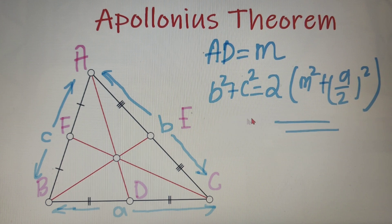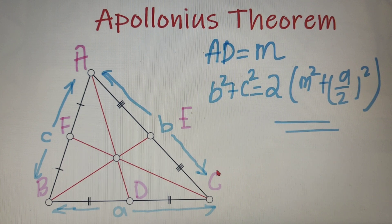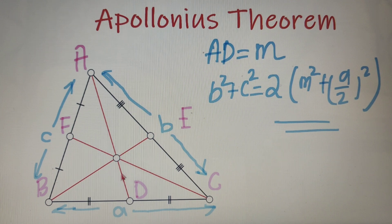So with the help of Apollonius theorem, we can calculate the length of the median for any given triangle given that all the lengths of the sides are given. Now with the help of this theorem, we can calculate the length of all the three medians.